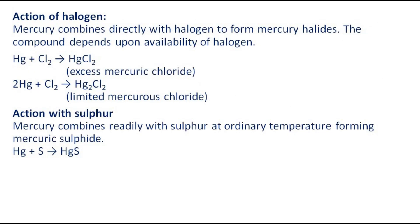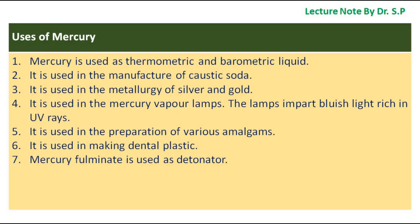Action of halogens: Mercury combines directly with halogens to form mercury halides. The compound formed depends upon the availability of halogen. Action with sulfur: Mercury combines readily with sulfur at ordinary temperature, forming mercuric sulfide.